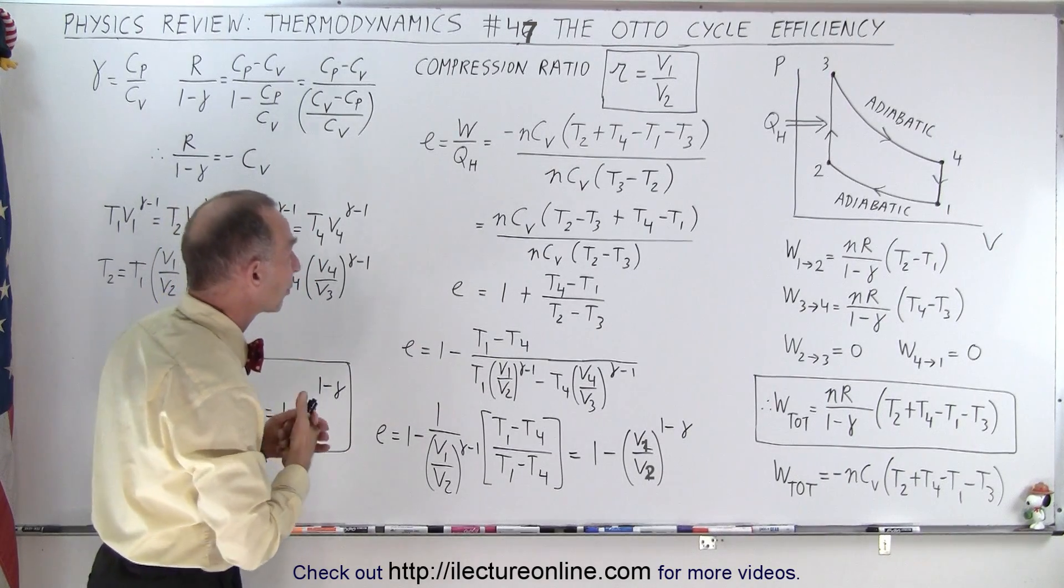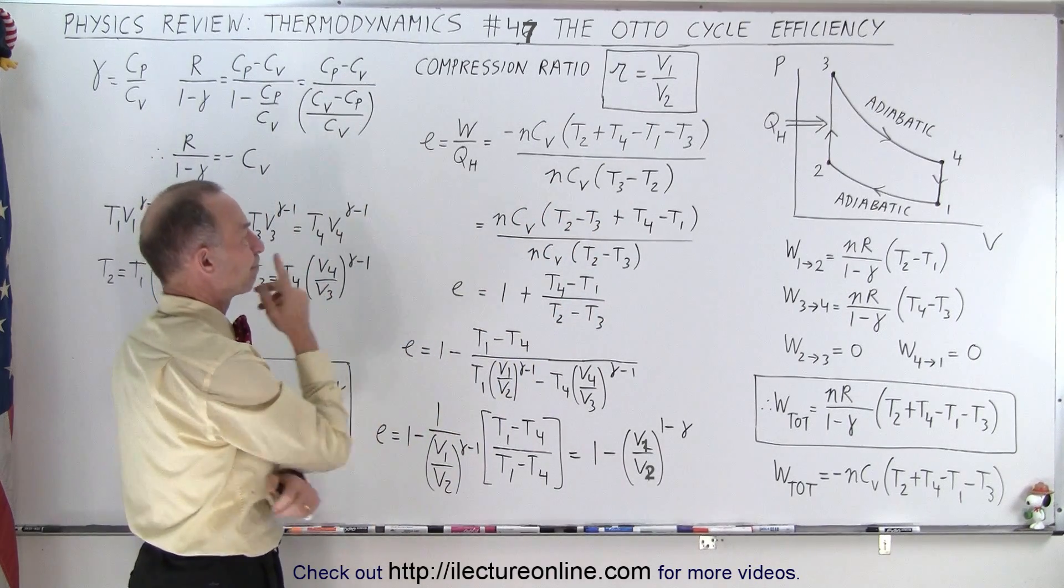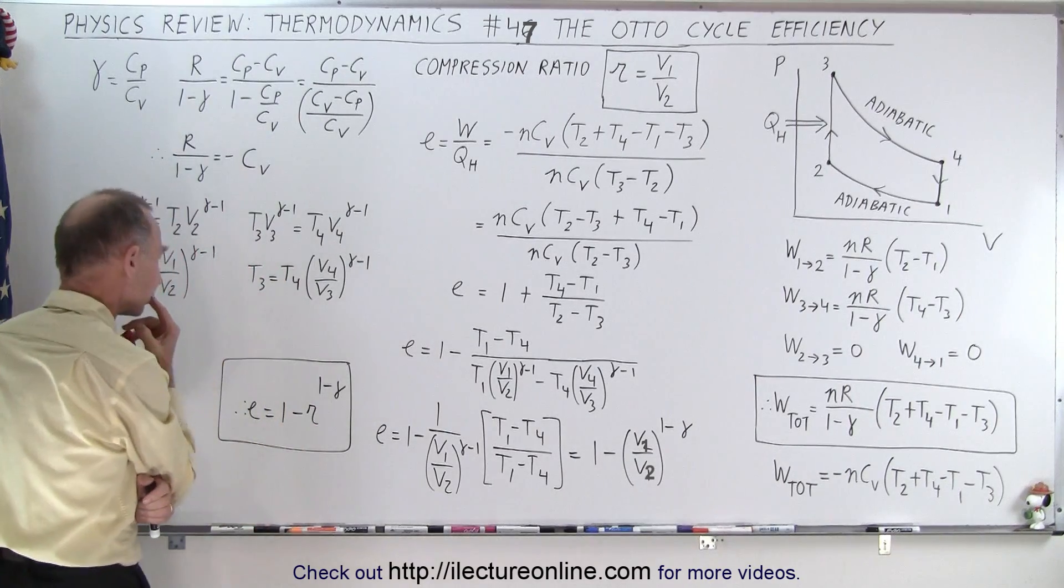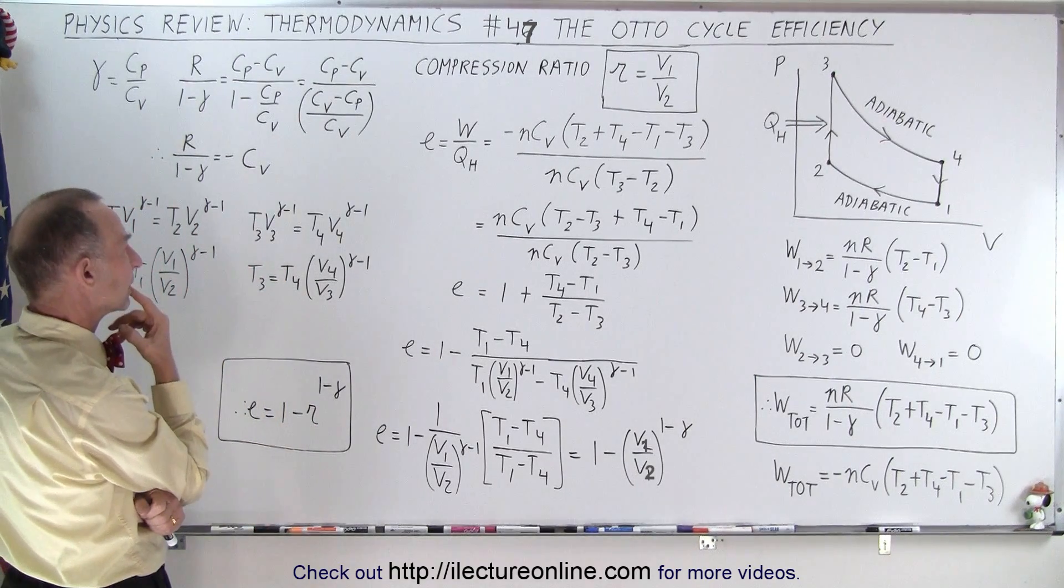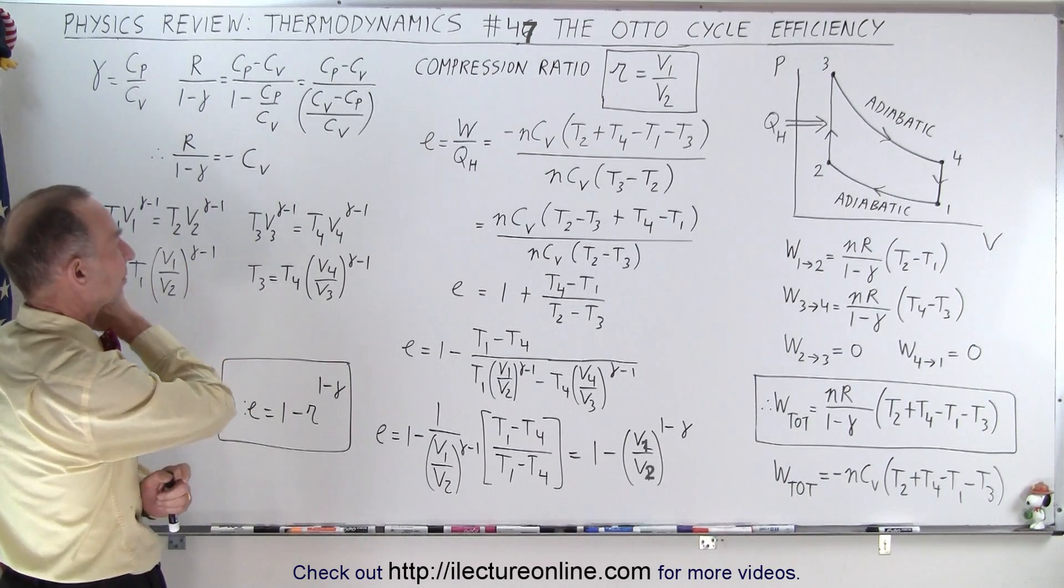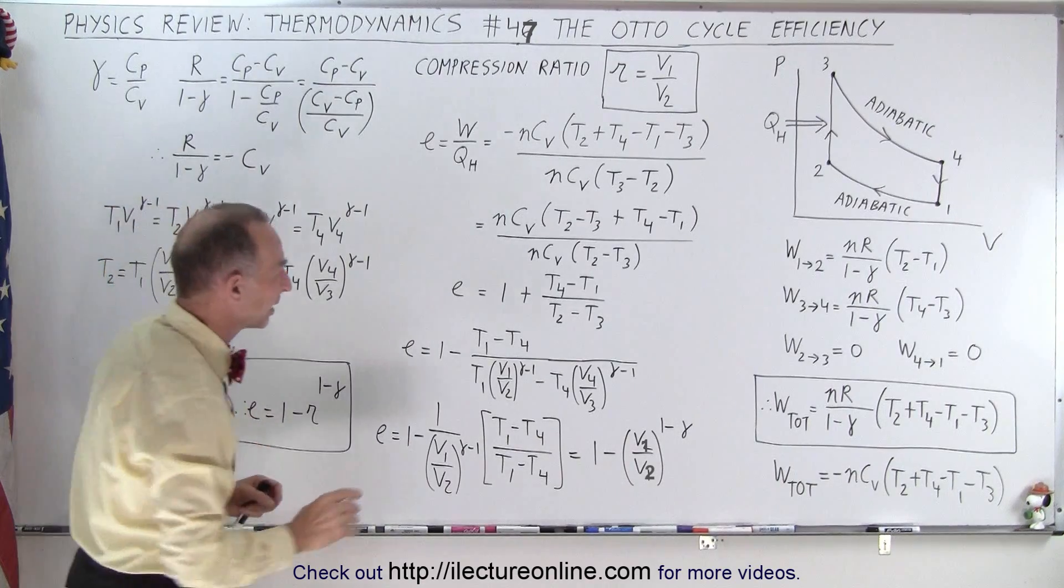What we're going to do next is simplify this. Cv cancels out. The n's and Cv cancel out, so this cancels out.